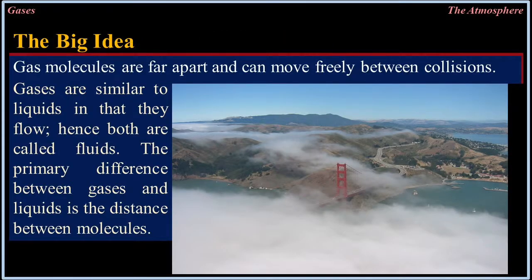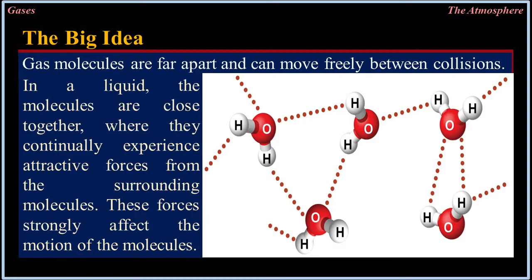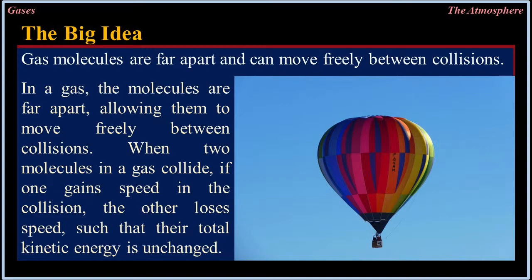The big idea: Gas molecules are far apart and can move freely between collisions. Gases are similar to liquids in that they flow — hence both are called fluids. The primary difference between gases and liquids is the distance between molecules. In a liquid, the molecules are close together where they continually experience attractive forces from the surrounding molecules, strongly affecting their motion. In a gas, the molecules are far apart, allowing them to move freely between collisions. When two molecules in a gas collide, if one gains speed, the other loses speed, such that their total kinetic energy is unchanged.